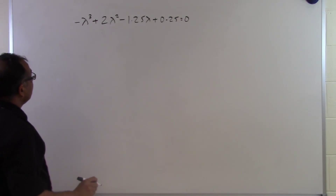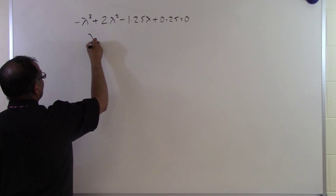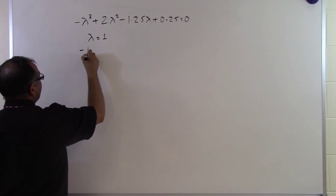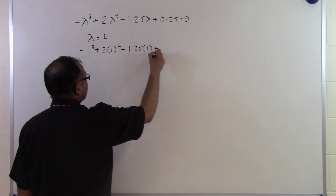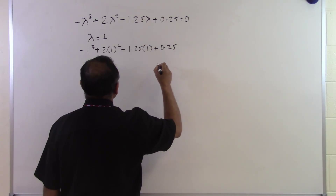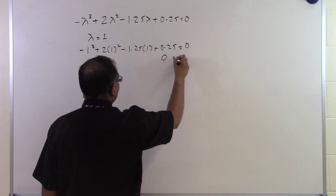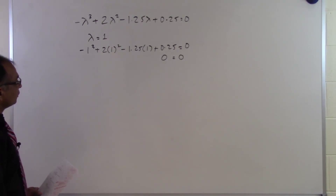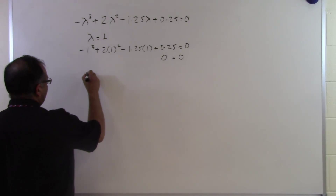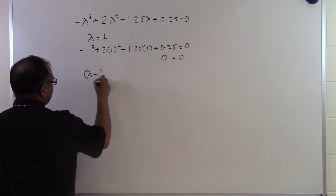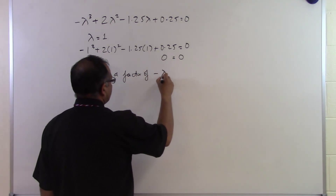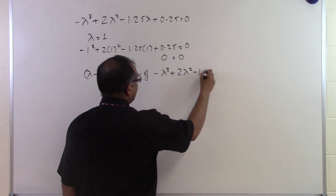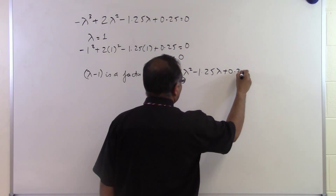You can see that lambda equal to 1 is a root here, because if I substitute 1: minus 1 cubed plus 2 times 1 squared minus 1.25 times 1 plus 0.25 gives me 0 equal to 0. So just by observation, I'm able to identify that.